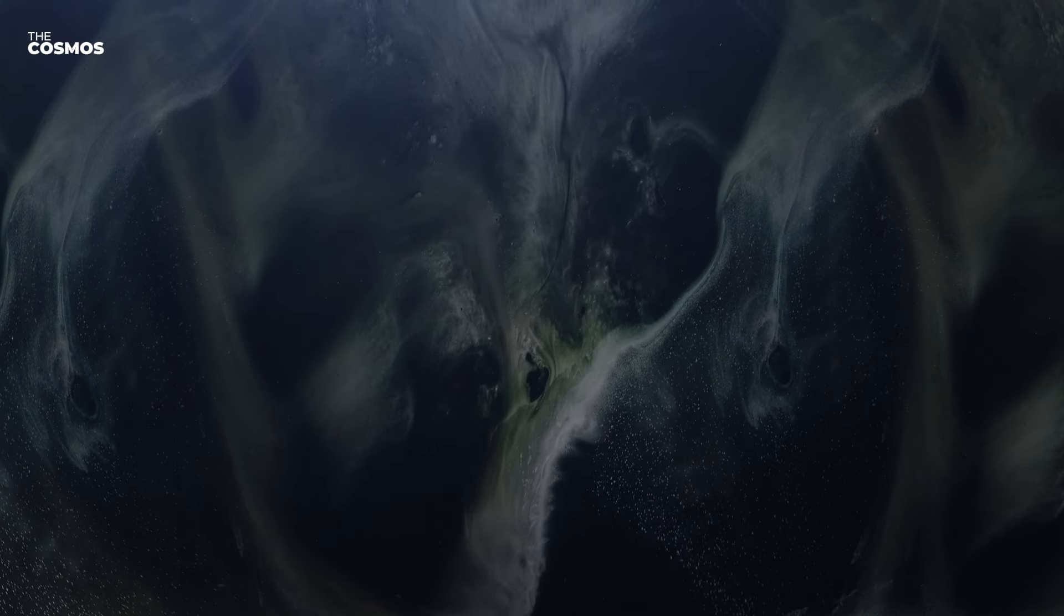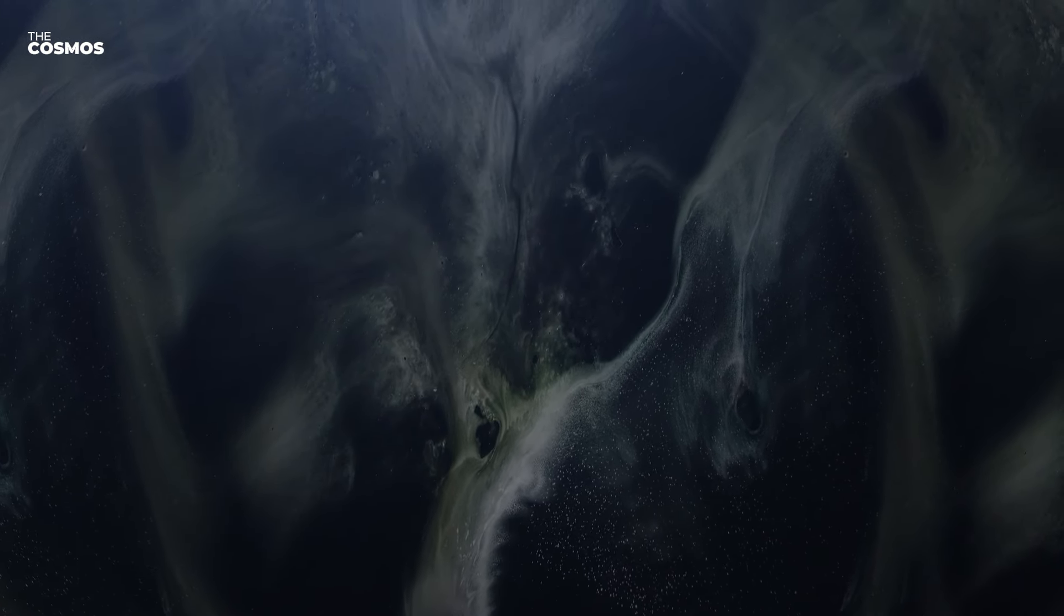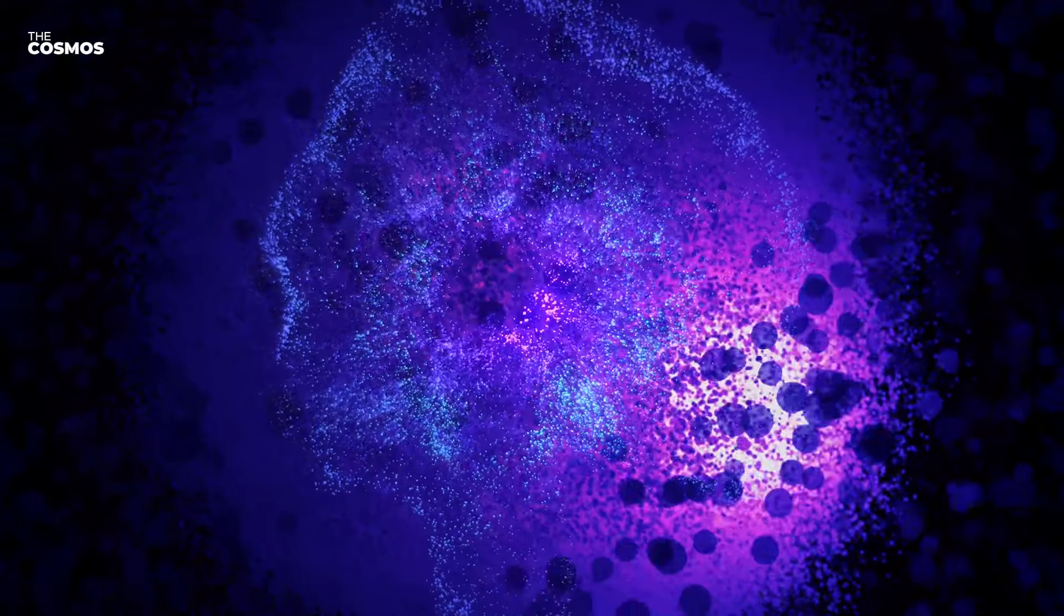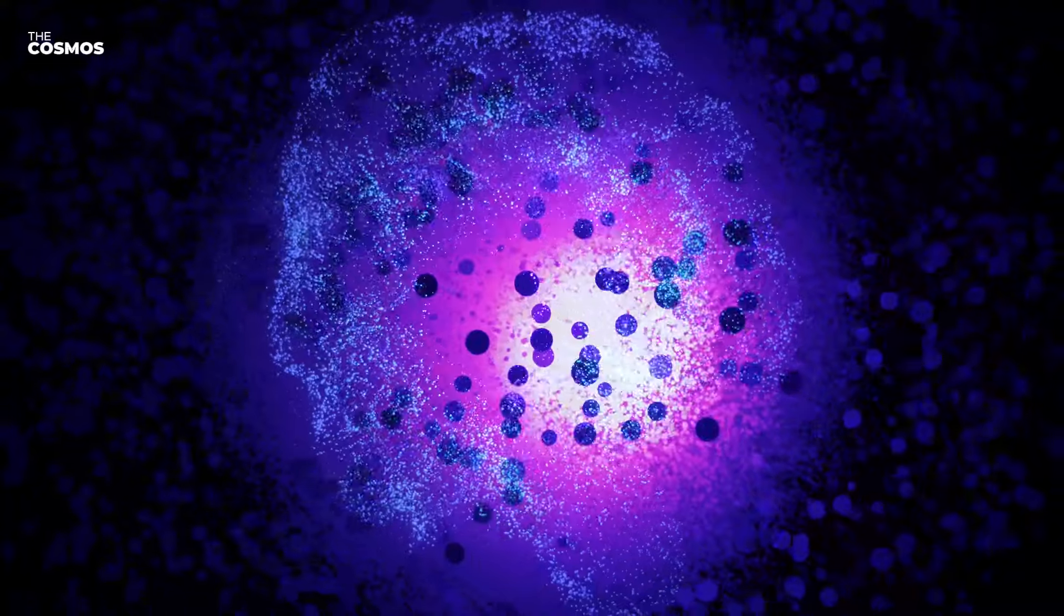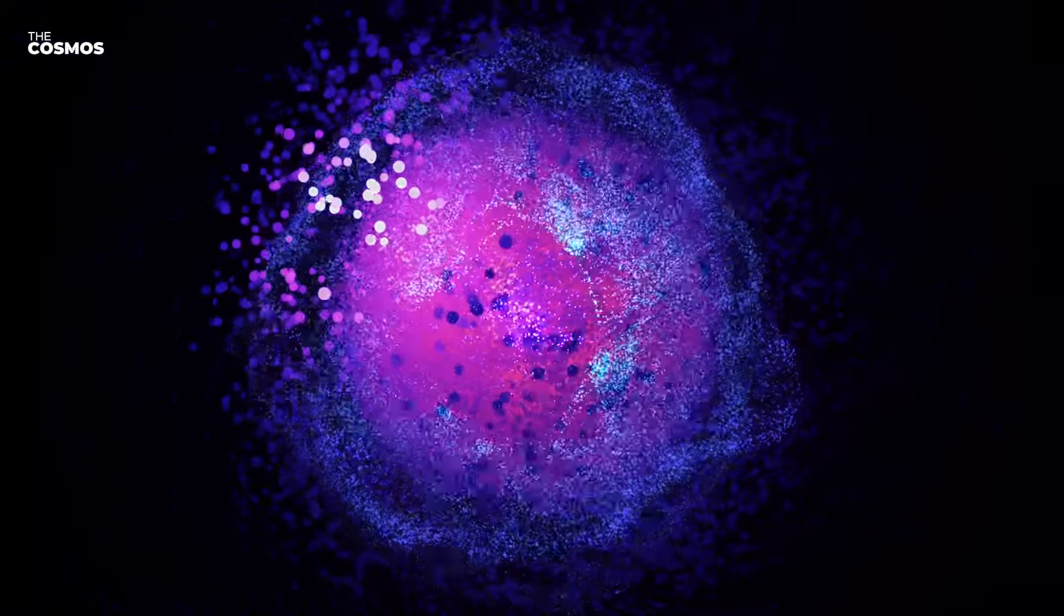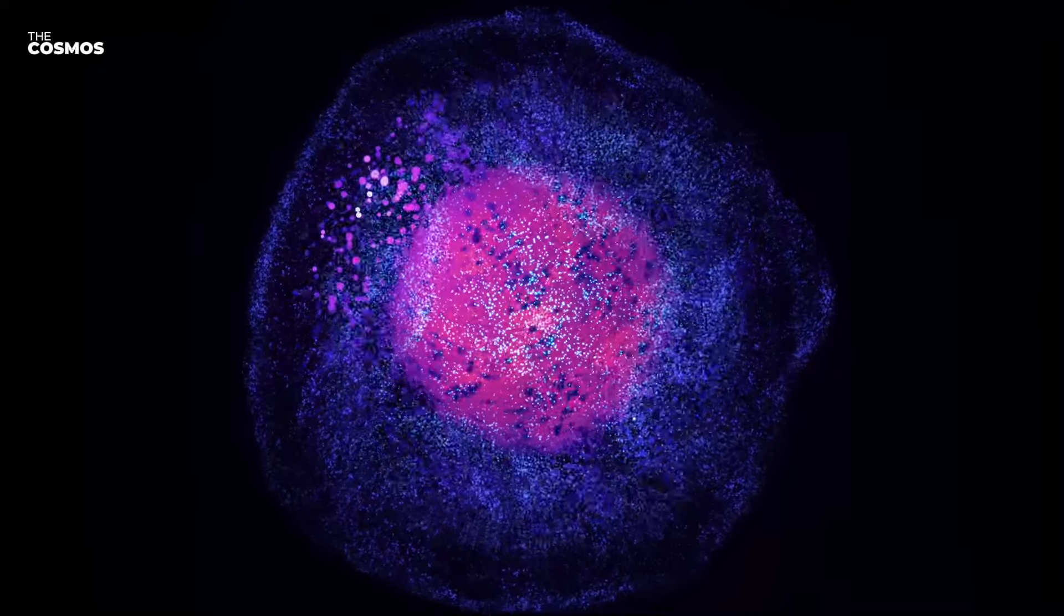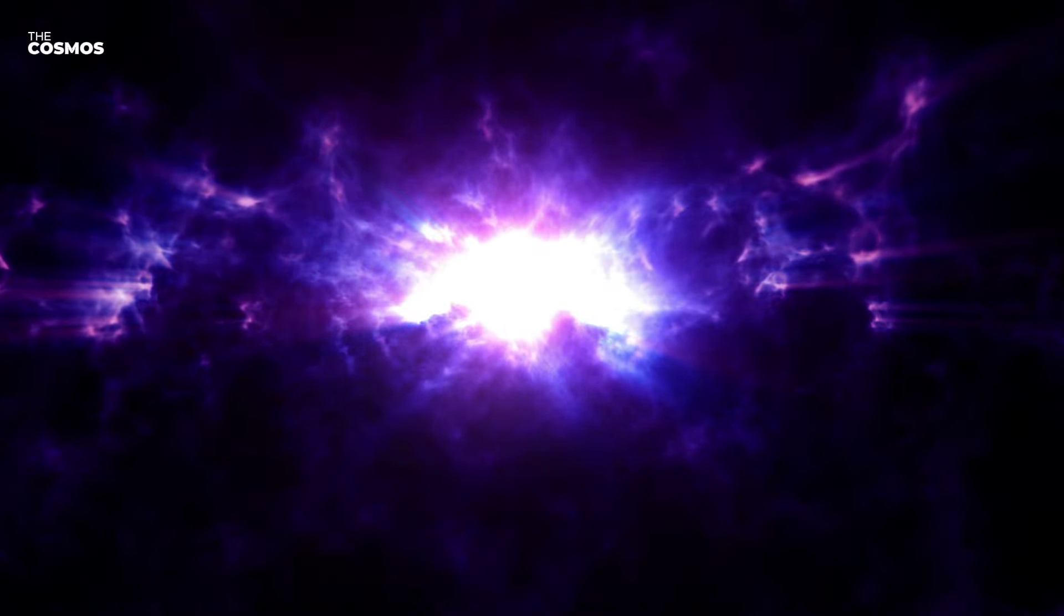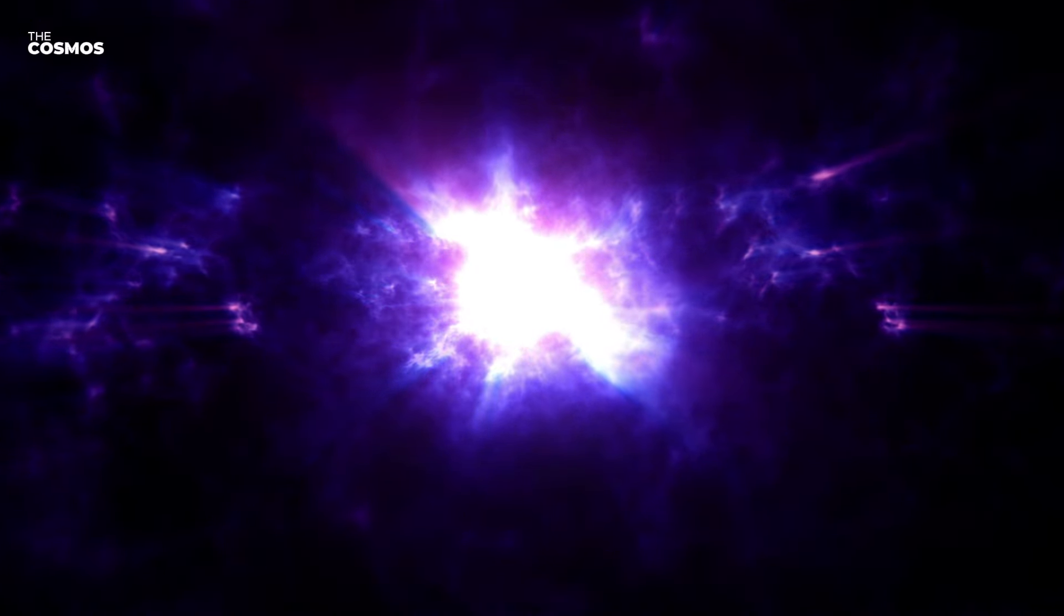In the final stages of the Big Rip, the very matter that makes up stars, planets, and even atoms is not safe. The increasing dark energy starts pulling apart the fundamental components of matter. Molecules, atoms, and eventually subatomic particles are ripped asunder. This breakdown of matter happens incredibly fast, leading to a universe where nothing solid remains. The ultimate fate in the Big Rip scenario is a complete disintegration of all structures in the universe.